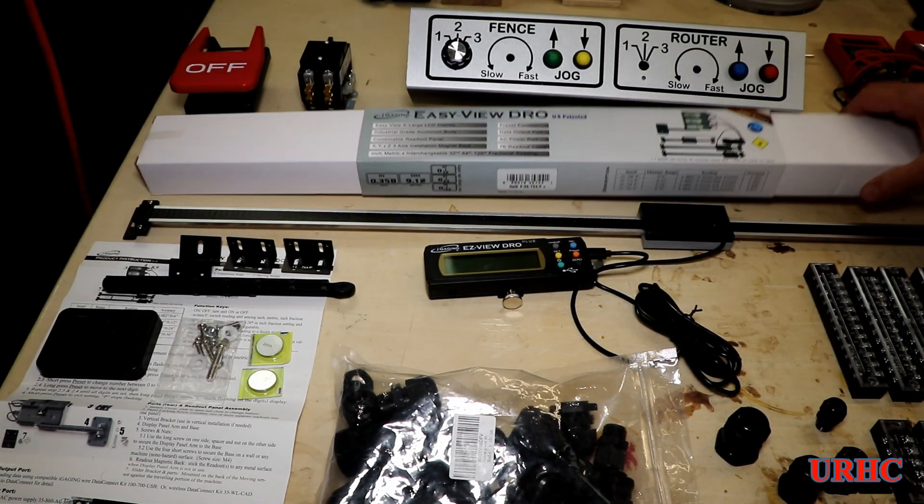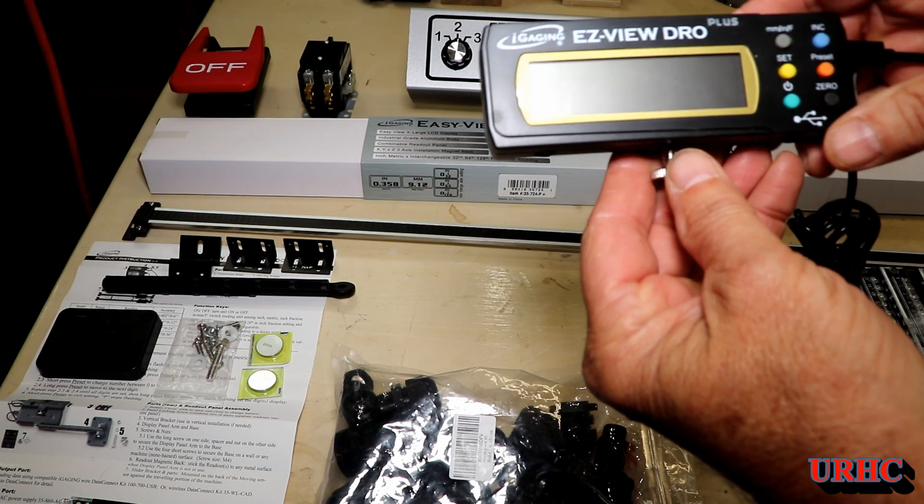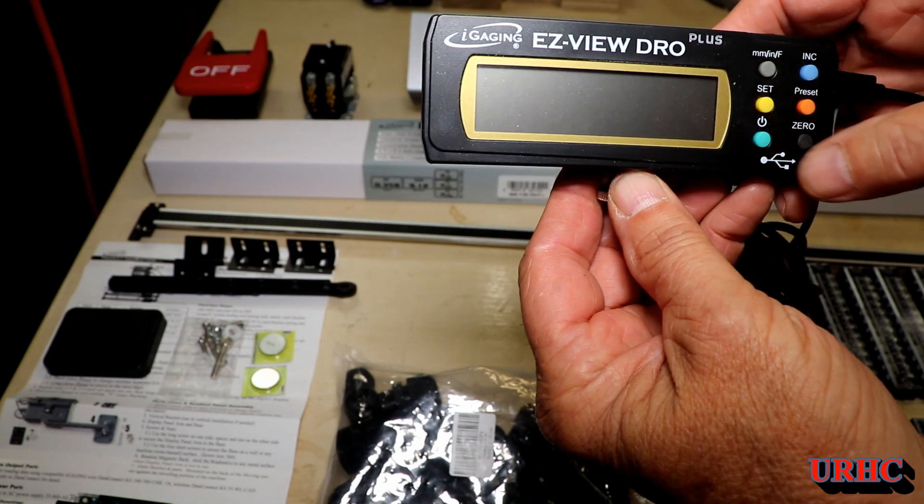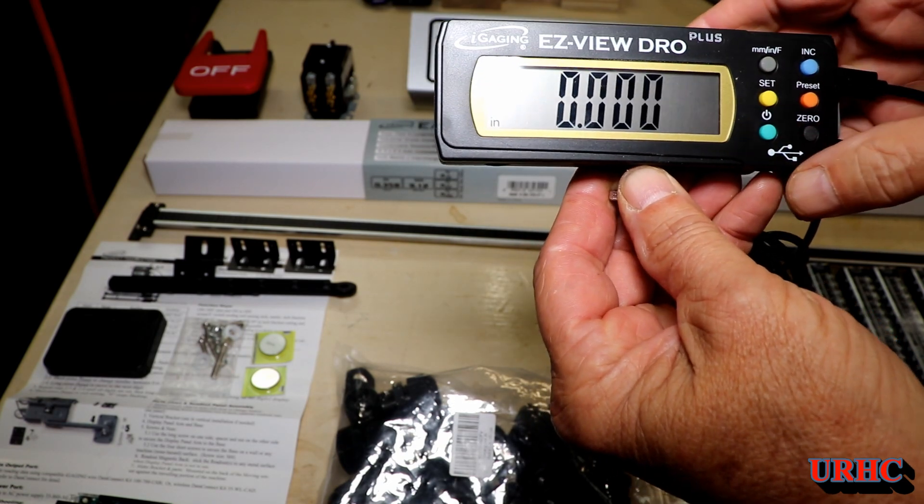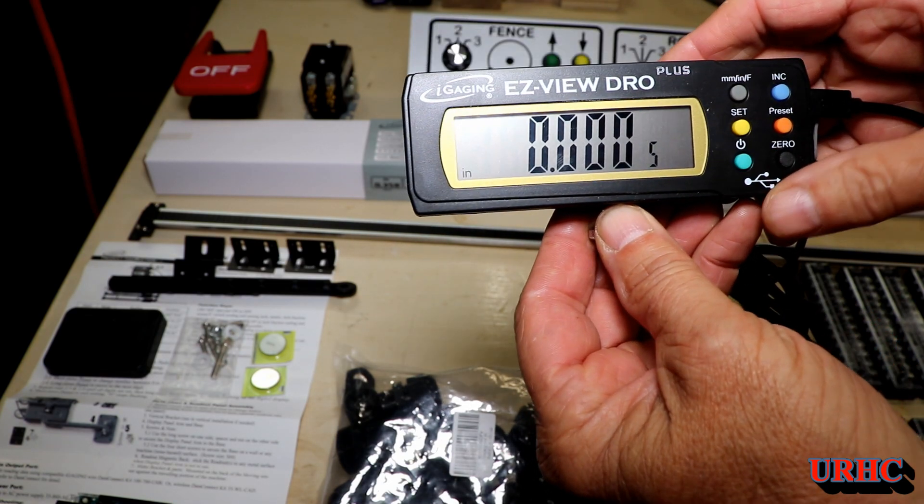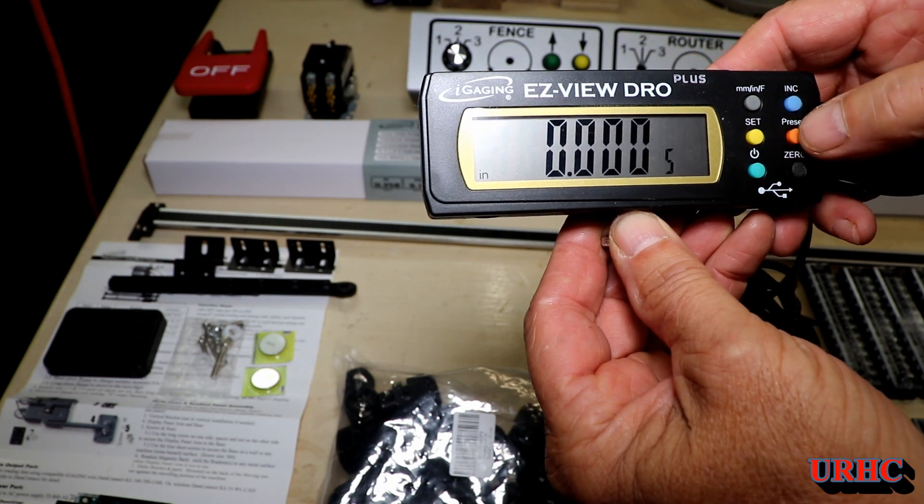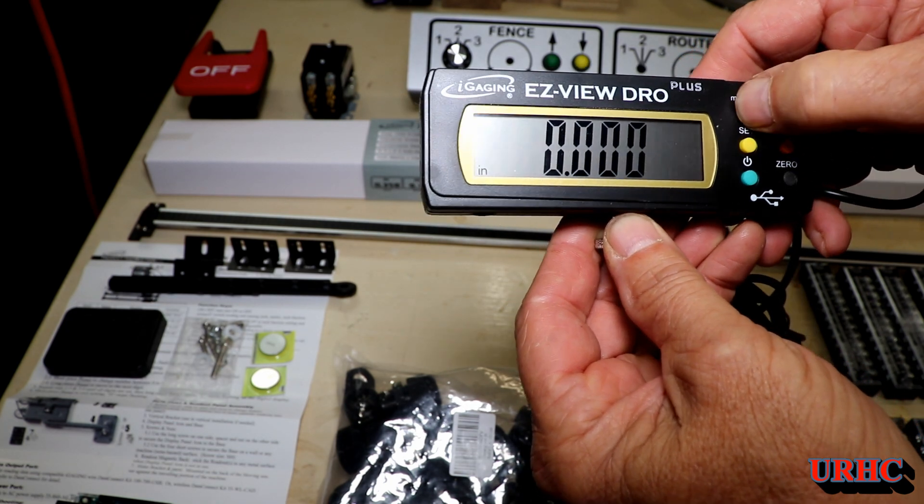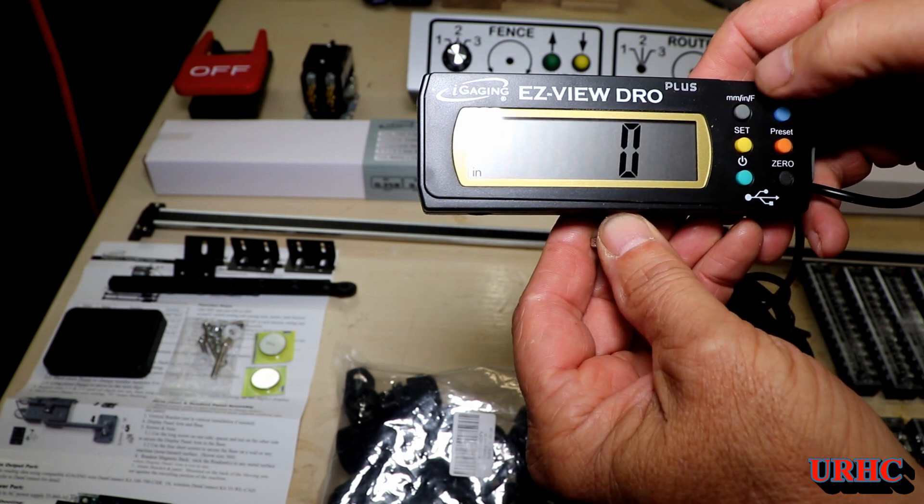So I decided to go with some of these EasyView DROs and they look pretty neat. They've got a really nice large viewing surface, power button. They've got a USB, you can tie them to your computer also, and they also have an external power jack for a 120 volt plug.